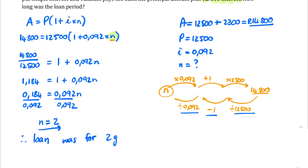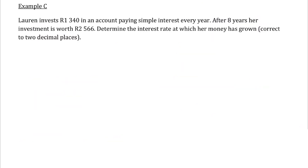You don't have to learn all three formulas — you can use your A formula. Example C: Lauren invests 1,340 rand in simple interest per year. After eight years, her investment is worth 2,566 rand — that's the total amount in her bank account. Determine the interest rate. So we want to know what R is, but first we find I and then convert to R. Remember R is always a percentage, but our formula works with I. We want the rate correct to two decimal places.